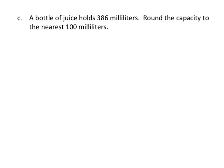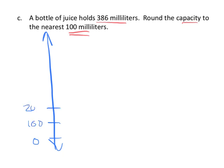Our last example in this video: a bottle of juice holds 386 milliliters. Round the capacity to the nearest hundred. Again, I'm going to kind of belabor the point a little bit. Eventually, students won't have to do this. But we're going to figure out, since we're being told to round to the nearest hundred milliliters, that means our number line, our basic number line, is going to skip by hundreds.